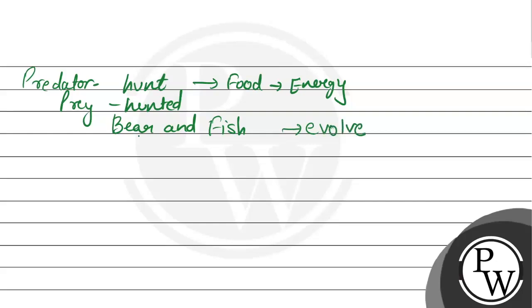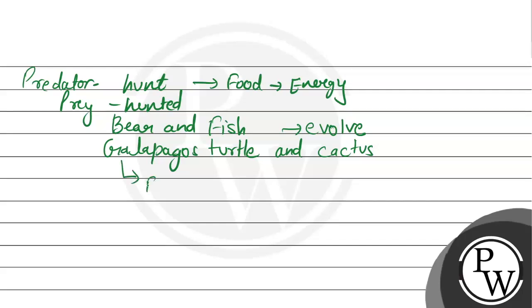Another example is the Galapagos island turtle and the cactus plant. They have also evolved together to protect themselves. The predator develops features to meet its food requirements, while the prey also evolves adaptations to protect itself and stay safe in the environment.